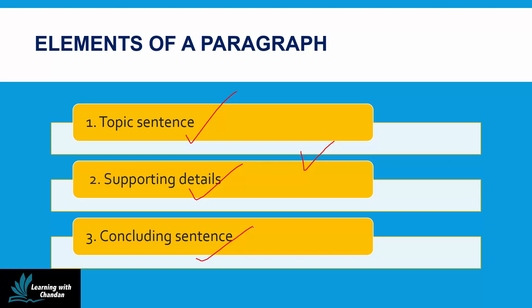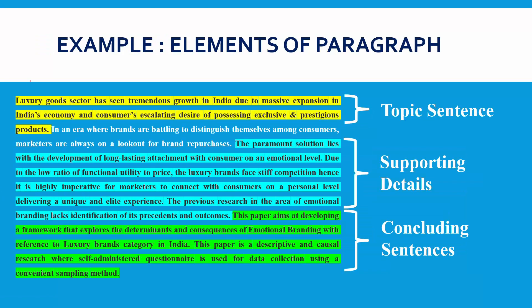Let's check and understand this better with an example. The first sentence is the topic sentence because it talks about the luxury goods sector and introduces the main topic of the paragraph to the readers. The further information about the luxury goods sector is explained and that makes the body or supporting details of the paragraph. Supporting details consist of solutions suggested or the main reasons behind competition in the luxury brand sector, and it also connects information about previous research related to the same topic. The last few sentences form the conclusion, and they also form a base for a new paragraph or new idea to be discussed.